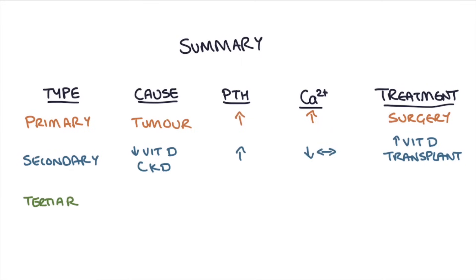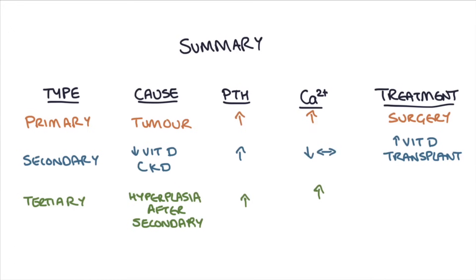And tertiary hyperparathyroidism is a result of hyperplasia of the parathyroid glands after secondary hyperparathyroidism. It leads to a high parathyroid hormone level, and once the cause of the secondary hyperparathyroidism is treated, it leads to a high serum calcium level. The treatment is surgery to remove the extra hyperplastic parathyroid tissue.